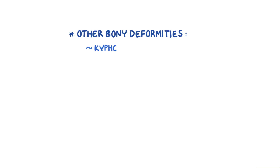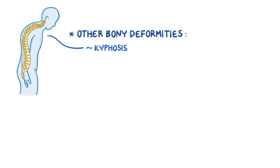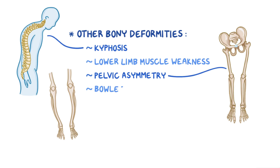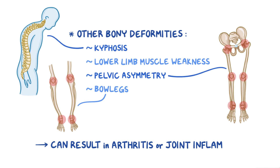Other bony deformities from Paget's disease of bone include kyphosis, which is an excessive curvature of the spine making a person face down to the ground, lower limb muscle weakness from misshapen vertebrae compressing the spinal cord, and pelvic asymmetry. It can even lead to bow legs if the tibias and femurs get too weak to support a person's weight and begin to bend over time. If the parts of the bone involved in a joint become affected, it can result in arthritis or joint inflammation.